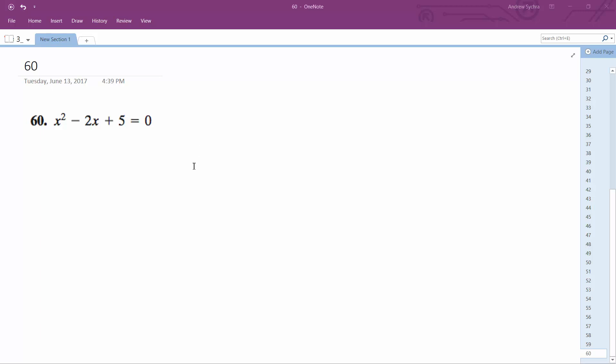Solving for 60, for this problem, we're going to use the quadratic formula: opposite of b plus or minus b squared minus 4ac all over 2a.